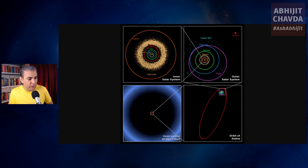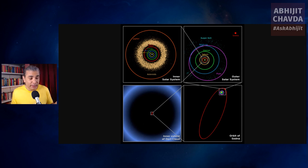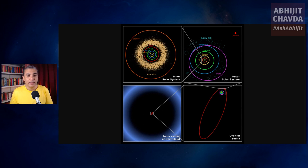That gives you an idea of the orbit of Sedna, and this is the orbit of Sedna in comparison with the Oort Cloud. It gives you an idea of how large the Oort Cloud is and how far away it is from us. It's essentially in interstellar space, but it is still under the influence of the Sun's gravity. It's an enormous, hypothetical cloud of cometary nuclei — the nuclei of comets.